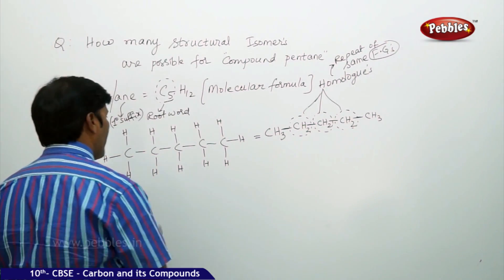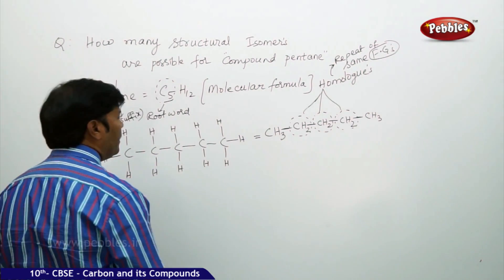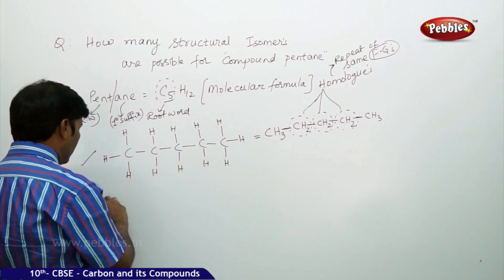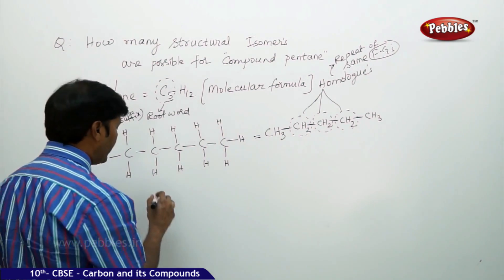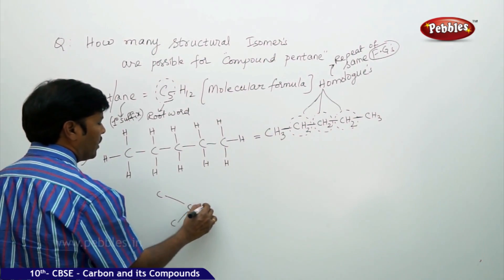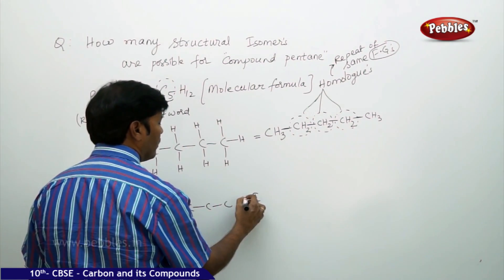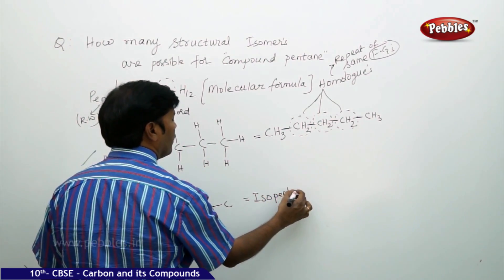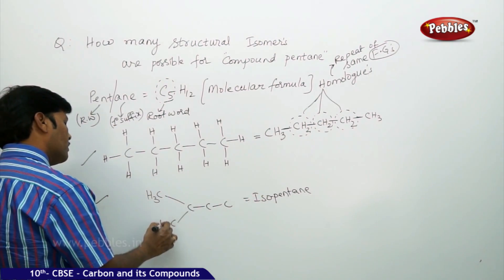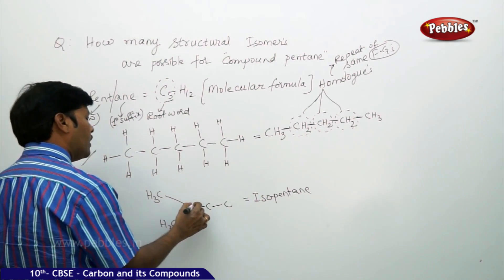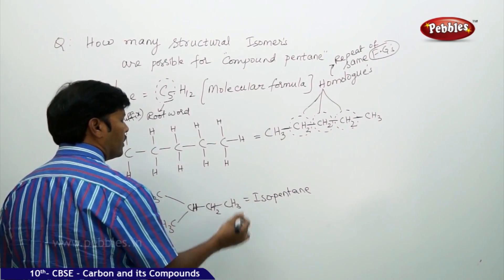Based on that, this is pentane — this is the first isomeric structure for the molecular formula C5H12. For the second isomeric structure, I am going to create a branch. This branched structure is called isopentane. Satisfying the tetravalences: CH3 single bond, CH3, then one hydrogen, then CH2, and then CH3.